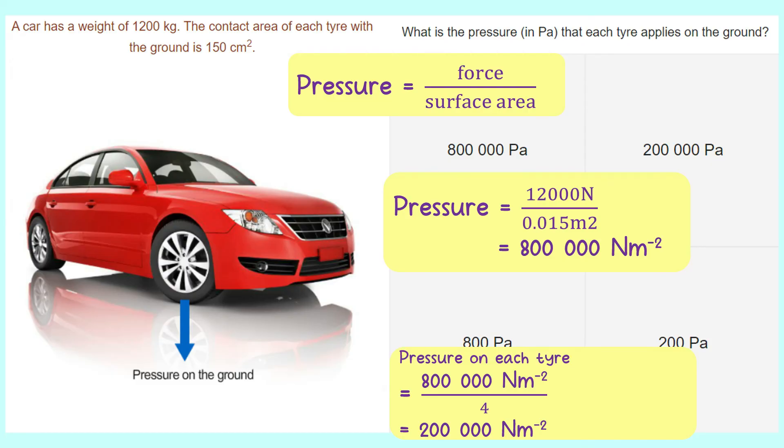You have to divide the total force with 4 because there are 4 tires. So, 12,000 divided with 4 is 8,000. So, 8,000 divided with 0.015 meters square equals to 200,000 Newton per meter square. So, the answer is 200,000 Newton per square meter or 200,000 Pascal.